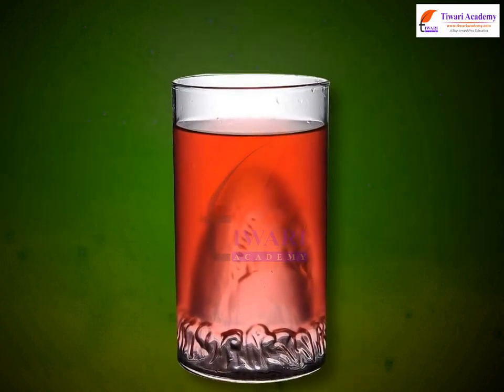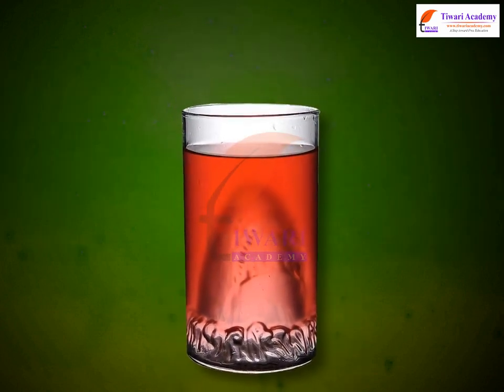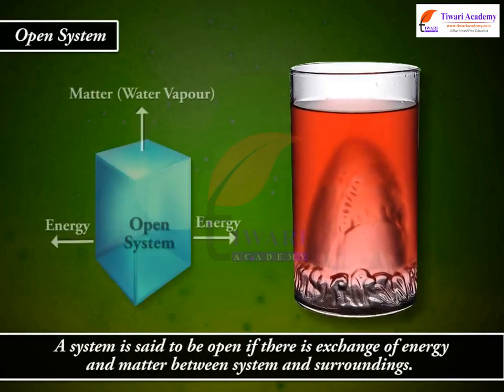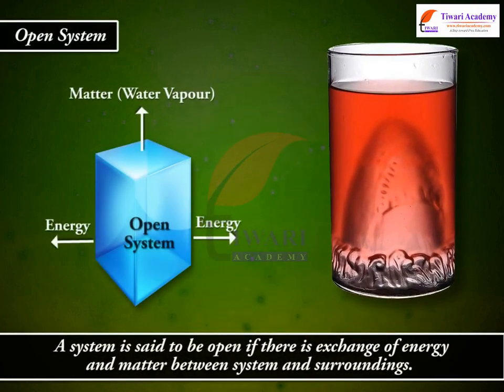Types of the system. Open system: a system is said to be open if there is exchange of energy and matter between the system and the surroundings.